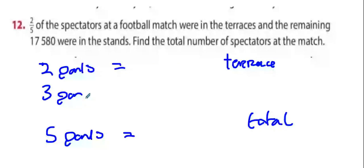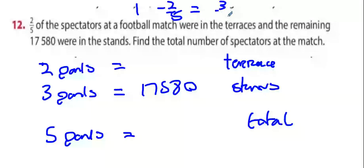That means three parts were where? Three parts were in the stands. And we know that three parts was 17,580, because one take away two-fifths is three-fifths. Three parts out of the five were in the stands.